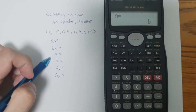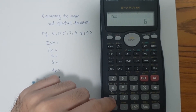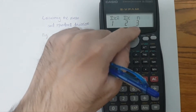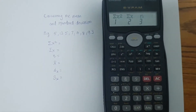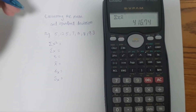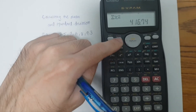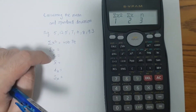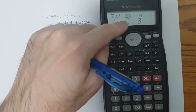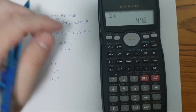We can now calculate the sum of squares, the sum of all these values, as well as the sample size. To calculate these, we click Shift and then the SSUM button — number one — and we are given the choice of what to compute. To compute the sum of squares, we click number one. The sum of squares is 416.74. To find the sum of the values, we click Shift, number one, then number two. The sum of the values is 47.8.